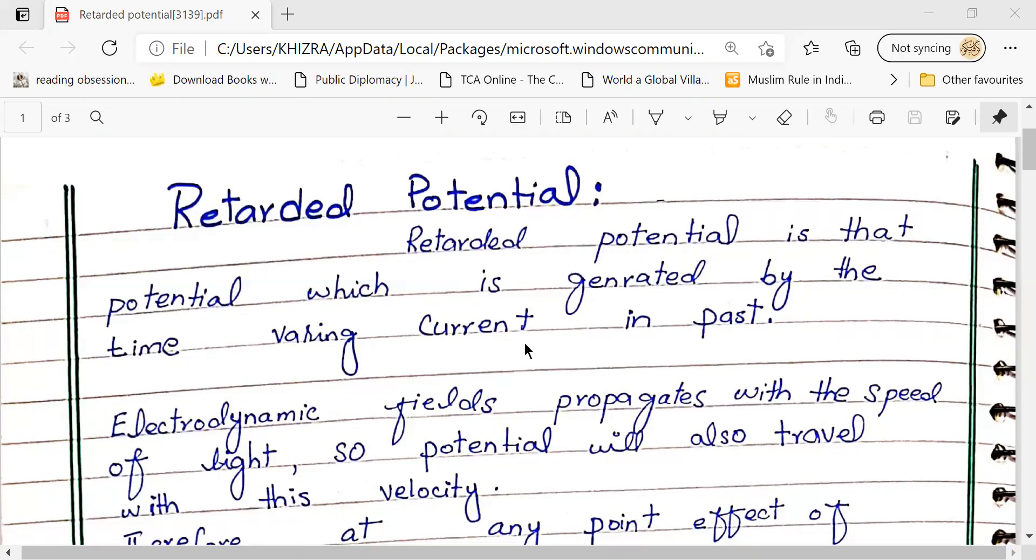Retarded means the potential which will lag the other potentials. Normally if we see it in simple form, retarded means that it will be slow. Retarded potential is that potential which is generated by time-varying current in past. Time-varying current in past generates - now you have got a signal with it, but that signal has a little delay. Then that is retarded potential.